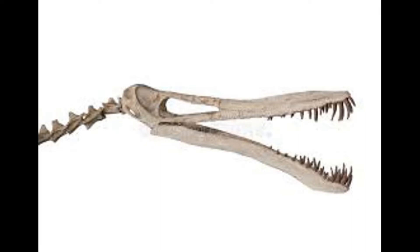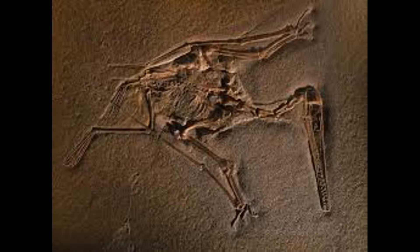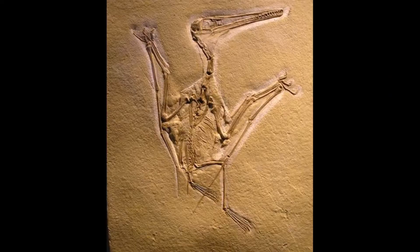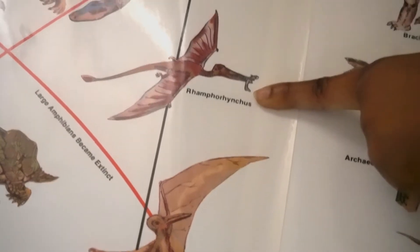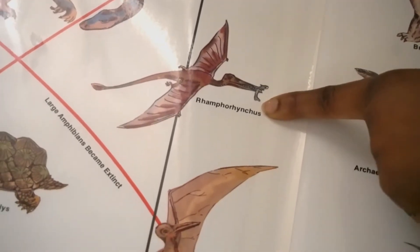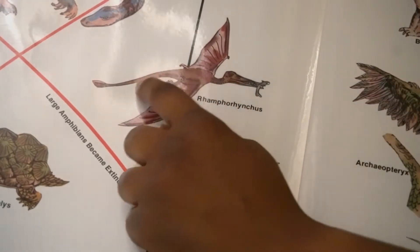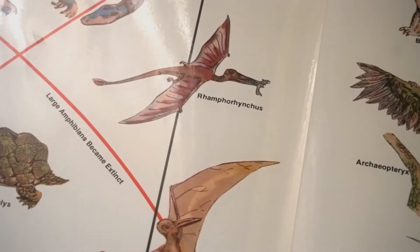Pterodactylus was also in the evolutionary process of losing its many slender teeth — some were already missing from the back of its jaws, and eventually a beak evolved. Many fossilized skeletons of these creatures have been found where they were once buried in the mud under the sea. The Rhamphorhynchus was another primitive flying reptile with a large wingspan. It had a long slender tail with a flap of skin on the end, which was used for steering in flight.